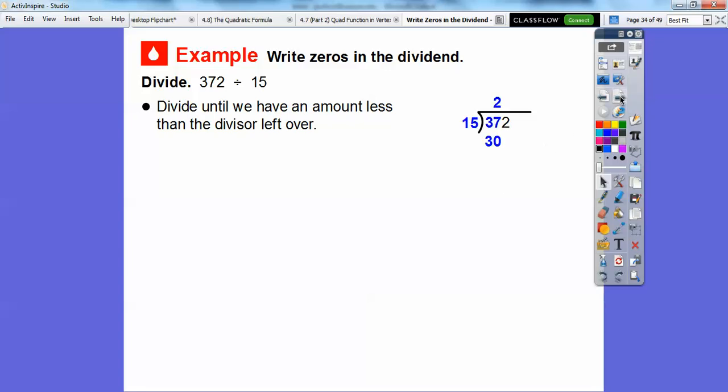Fifteen times 2 equals 30, so that's how many 15s we can get into that 37. Then we subtract and get 7. Let's slide the 2 down. Fifteen times 2 equals 30, so if we double the 2, it gives us 4. So 15 times 4 is going to be double that 30, giving us 60. When we subtract, we get that 12 is less than 15.